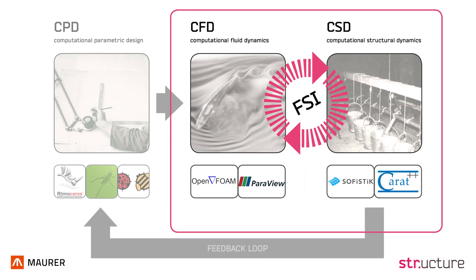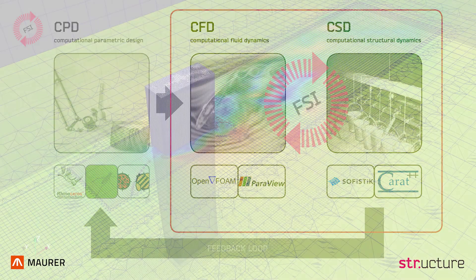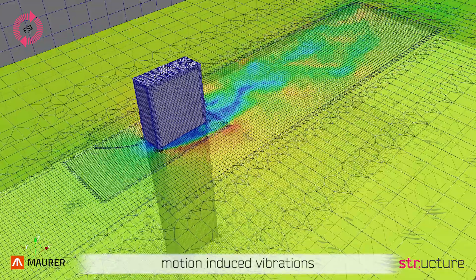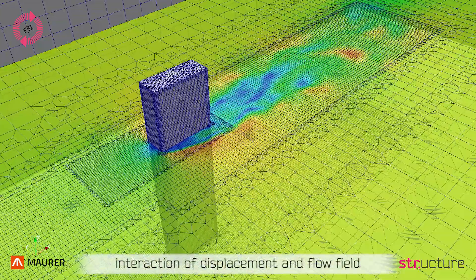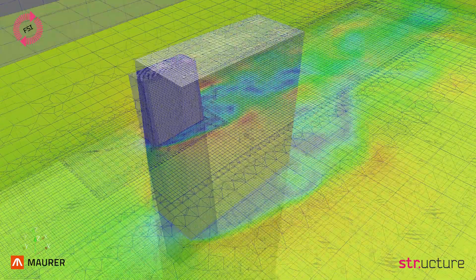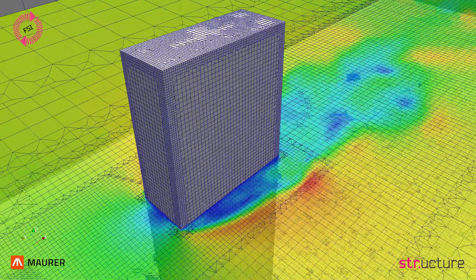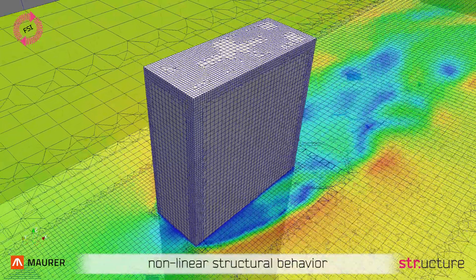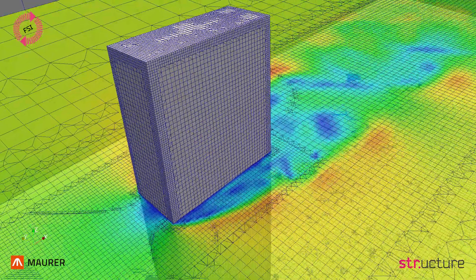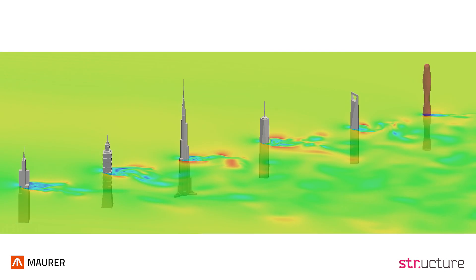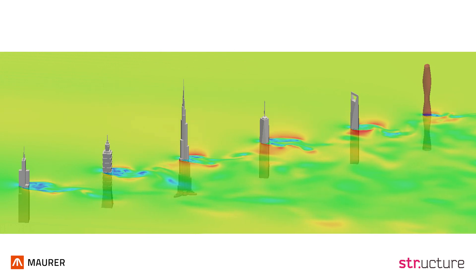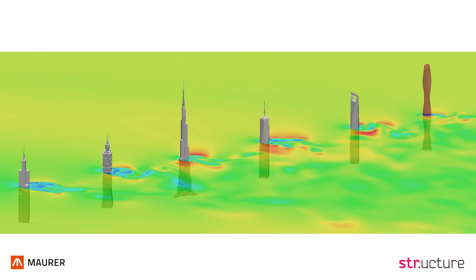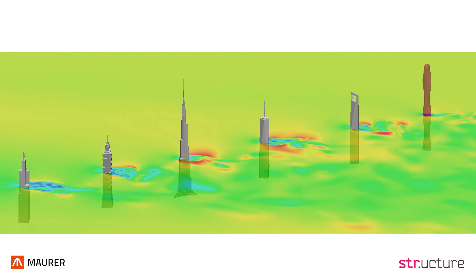Fluid-structure interaction simulations enable the assessment of motion-induced vibrations. Computing flow solutions on moving meshes allows the determination of interaction between structural displacement and the flow field. Beyond that, the investigation of all kinds of geometries and nonlinear structural behavior is inherently included in the simulation method. Today's capabilities of computational design tools enable the realistic assessment of all wind phenomena and response mechanisms of tall buildings, allowing complex structural systems and building shapes to be analyzed and optimized.